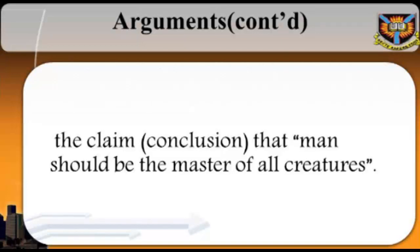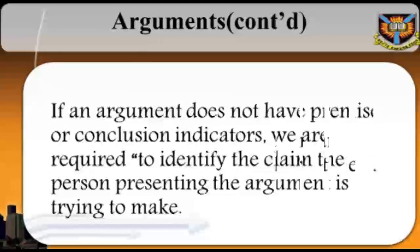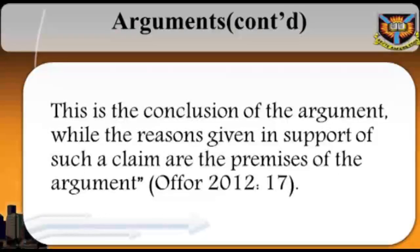It must be stated, however, that the words and phrases listed above may help us to recognize the presence of an argument or identify its premises or conclusion. But such indicators do not necessarily appear. Sometimes, it is just the meaning of the passage, or its setting, that indicates the presence of an argument. Thus, if an argument does not have premise or conclusion indicators, we are required to identify the claim the person presenting the argument is trying to make. This is the conclusion of the argument, while the reasons given in support of such a claim are the premises of the argument. (Offer, 2012, page 17)